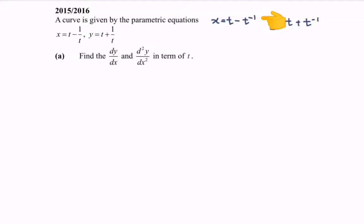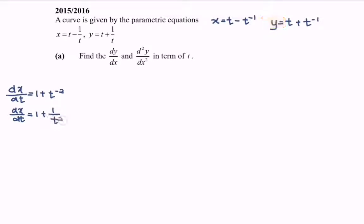Kindly differentiate x with respect to t. We will have dx/dt equals to 1. Differentiating further, we have plus t to the power of negative 2. Rewriting, dx/dt equals to 1 plus 1 over t squared. Equating the denominator, we will have dx/dt equals to t squared plus 1 over t squared.